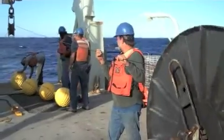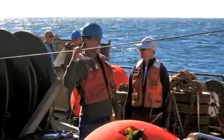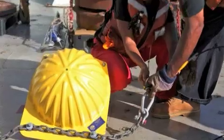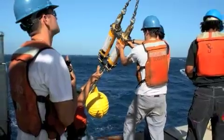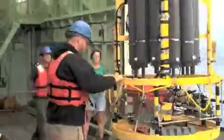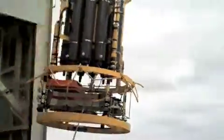On each of those moorings are current meter instruments that measure how fast the current is flowing past. In fact, all these instruments are acoustic, so they have no moving parts.